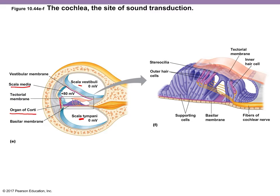This is the organ of hearing — the spiral organ of Corti. The organ of Corti is located between the two larger ducts: the vestibular duct and the tympanic duct, both filled with perilymph. The scala media, or cochlear duct, is filled with endolymph. The organ of Corti is our sense organ, sandwiched between two membranes.